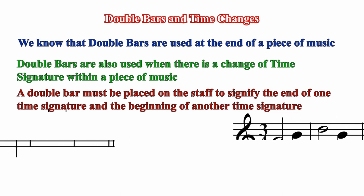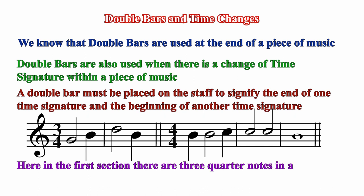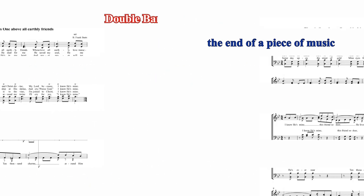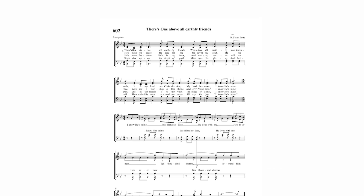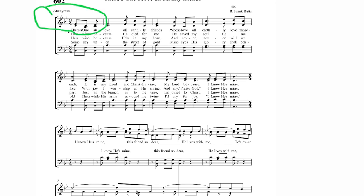An example is shown. In this example, the first section has 3 4 and there are 3 quarter notes in the bar. But after the double bar and the new time signature 4 4, there are 4 crotchets in each bar. An example song is also shown where the time signature in the first two staves is 3 4, and this changes to 4 4 in the third staff.